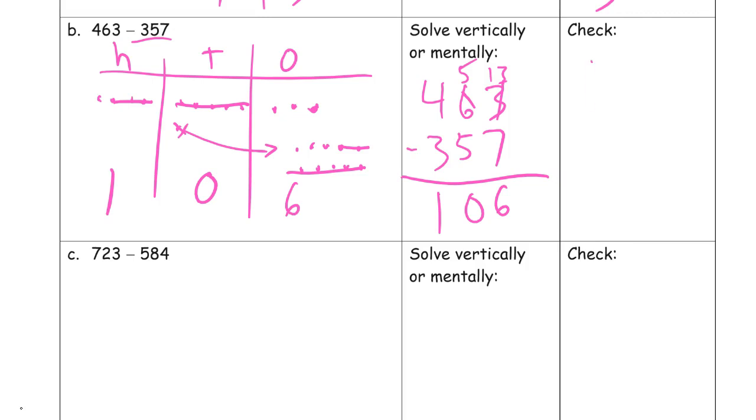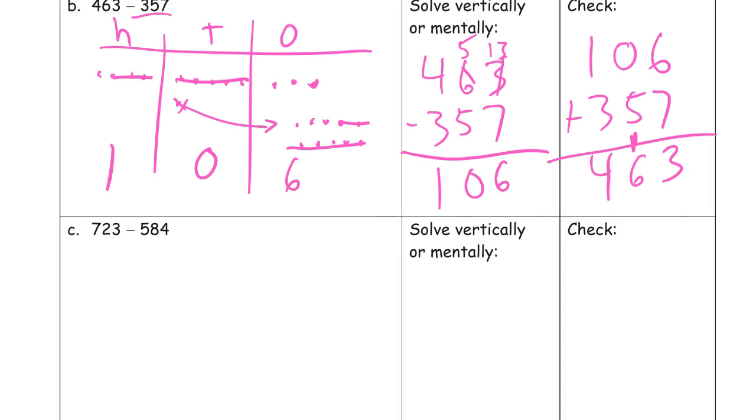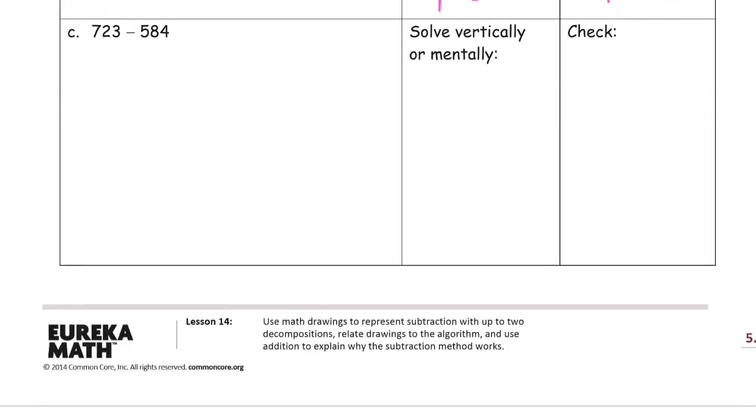But we're checking with addition. 106 plus 357. Six plus seven in our ones digits is 13, I got to compose a 10 with three ones left behind. And our tens place, five plus one, six tens. And hundreds is one plus three is four. 463 is what we started with. So far so good.